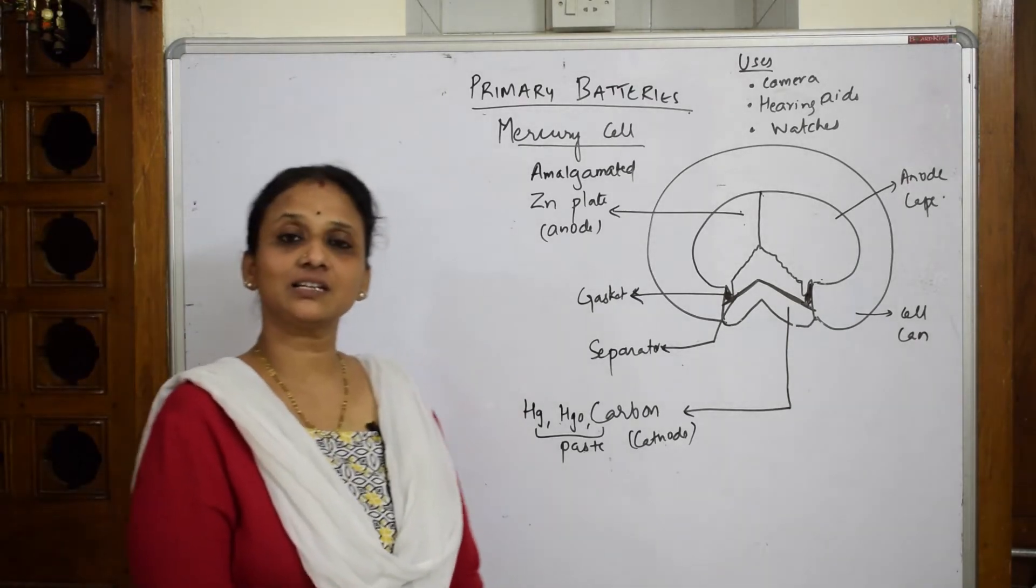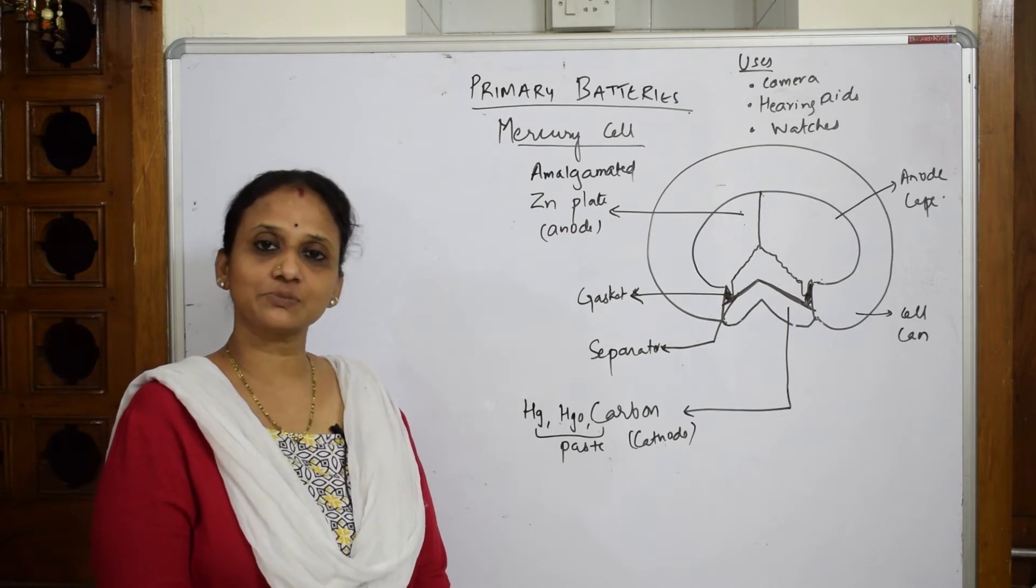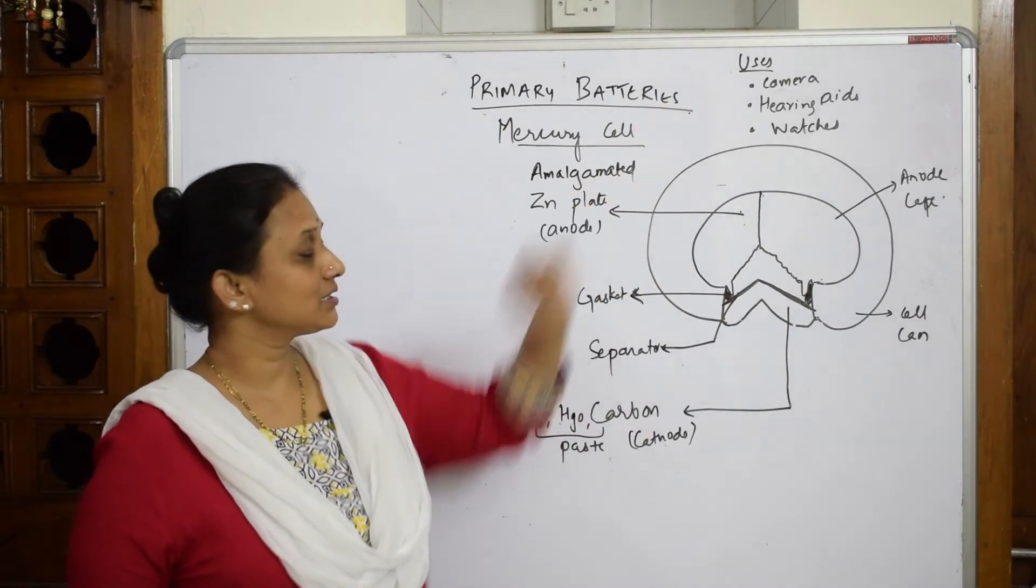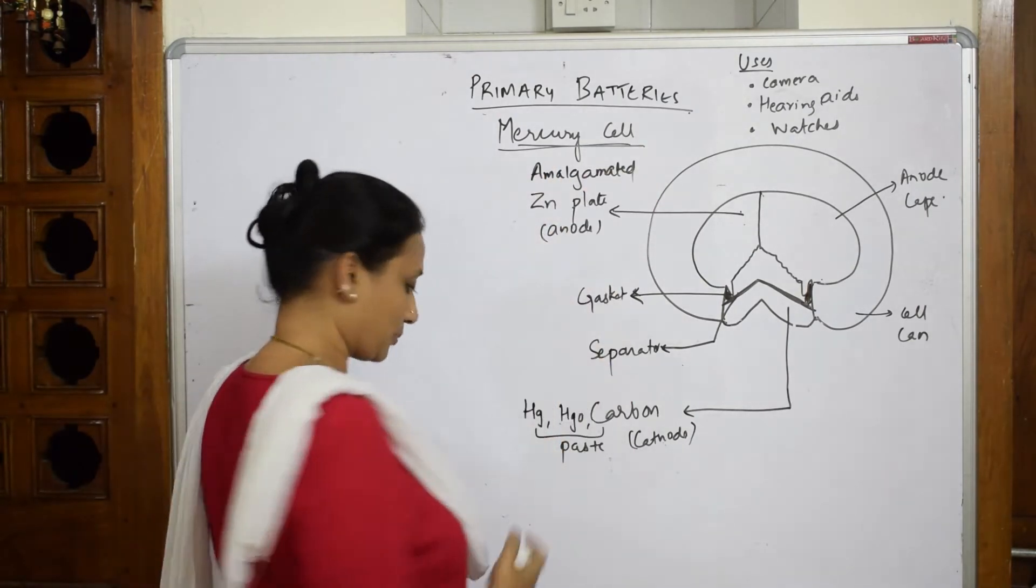Let's come back and see the next cell, the primary battery that is the mercury cell. Compared to the dry cell, this is more costlier and has certain applications. Just memorize those applications.